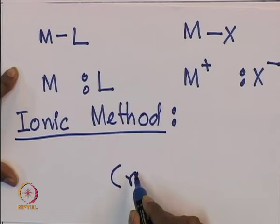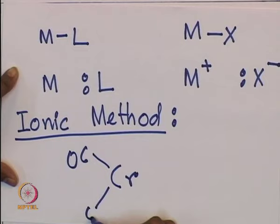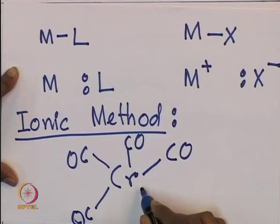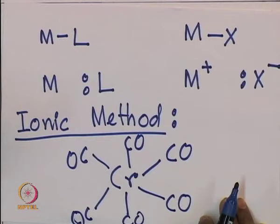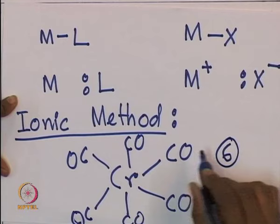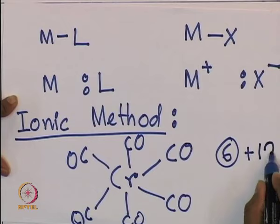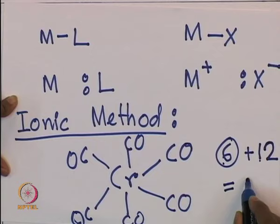For example, we have chromium hexacarbonyl complex — it is an octahedral complex. If you look at the periodic table: scandium, titanium, vanadium, chromium — chromium has 6 electrons. There are 6 carbon monoxides, and each carbon monoxide gives 2 electrons. So the total electron count is 6 plus 12, which is 18.